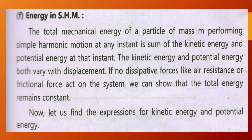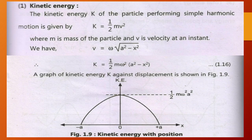The total mechanical energy of a particle of mass M performing simple harmonic motion at any instant is the sum of the kinetic energy and potential energy at that instant. The kinetic energy and potential energy both vary with displacement. If no dissipative forces like air resistance or frictional force act on the system, then we can show that the total energy remains constant. Now let us find the expression for kinetic energy and potential energy.